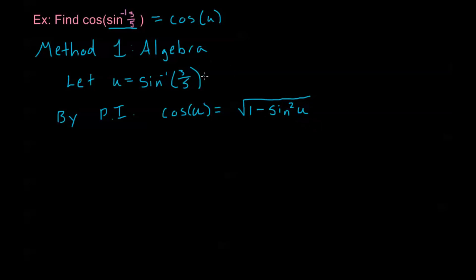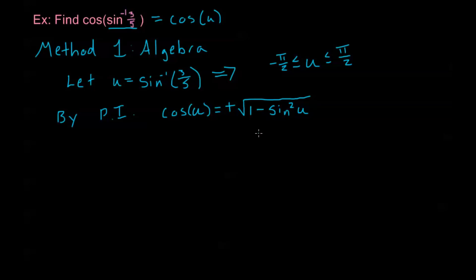How do we know if it's plus or minus? Since u equals sine inverse of three-fifths, u must be between negative pi over two and positive pi over two — that's the range of sine inverse. This places u in quadrants one and four, and in those quadrants cosine is positive, so we take the positive square root.